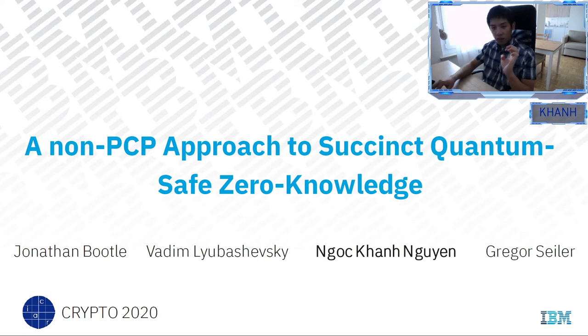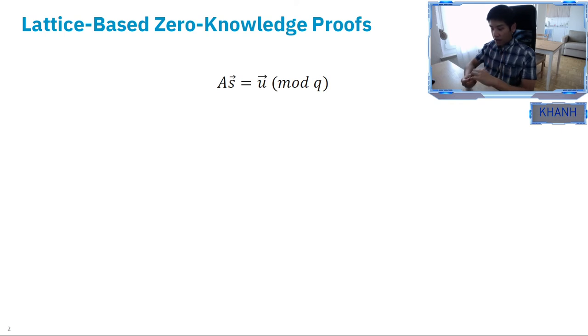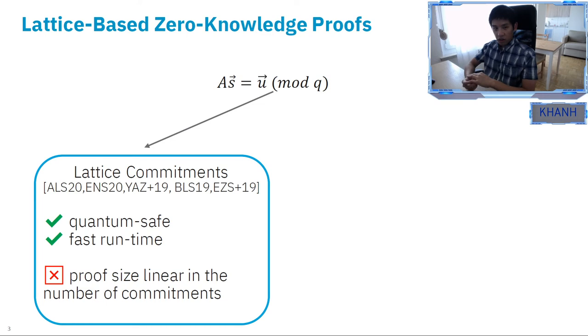In particular this approach is related to lattice-based zero knowledge proofs which can be summarized as the problem of proving knowledge of a short vector s such that As is equal to u mod q. There have been many recent works which prove this or similar relation and the main advantages of this approach is as follows. First of all they rely on quantum safe assumptions such as SIS or LWE and also they can be implemented efficiently. Addition can be implemented straightforwardly but then we have multiplication which can be implemented using NTTs for example. The main drawback is that the proof size is linear in the number of committed messages.